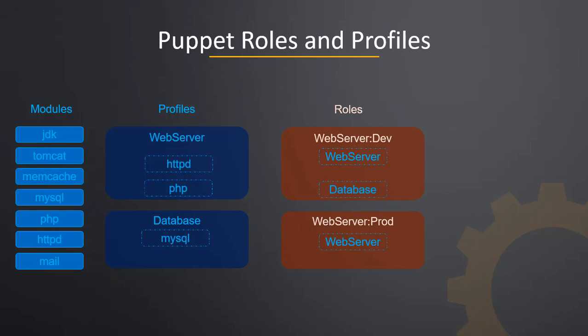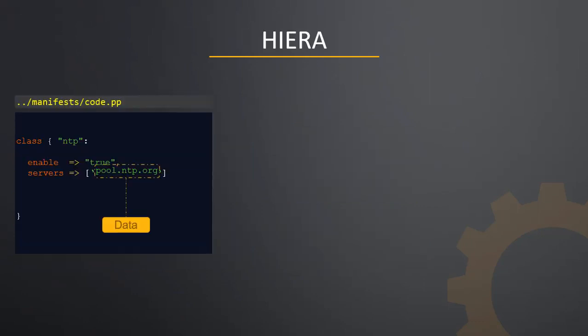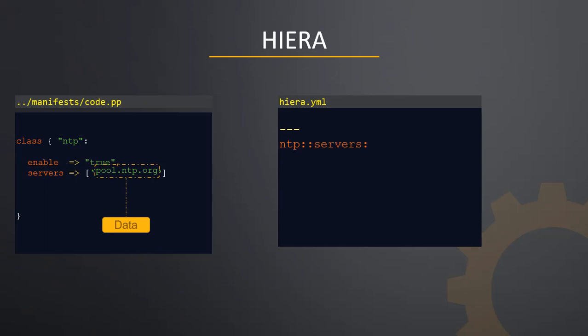Puppet roles and profiles are the two topmost layers in Puppet architecture. Let's look at a sample Puppet code used for configuring NTP on servers. It contains a class NTP used to configure NTP settings on a server, along with data about the NTP server, which is pool.ntp.org. If you wanted to share this code, others may have to modify the NTP server name based on their requirements, so having such data inside the code is not a good idea as it makes it difficult to share and reuse.